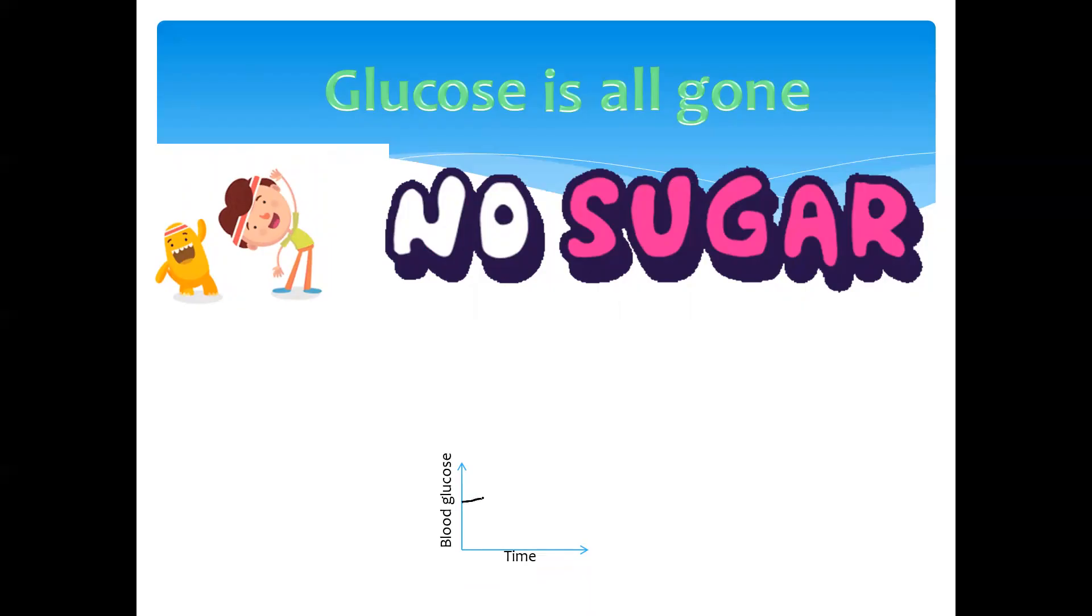From a normal glucose level, a high level of activity or a long period without food would then result in the glucose level dropping. A lack of glucose would prevent the process of cellular respiration to get energy for the cell.